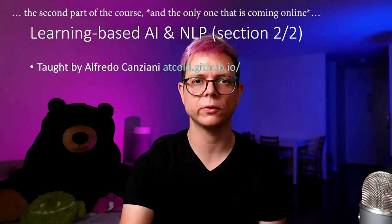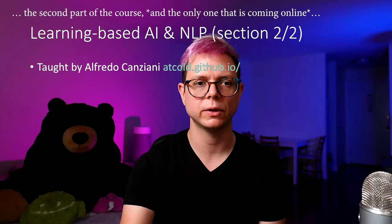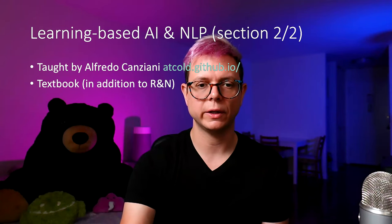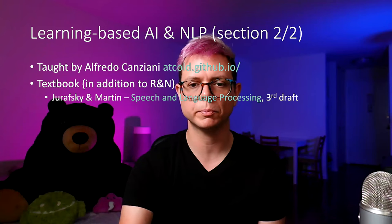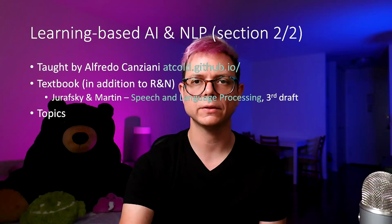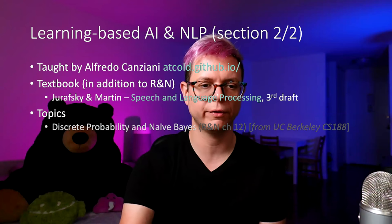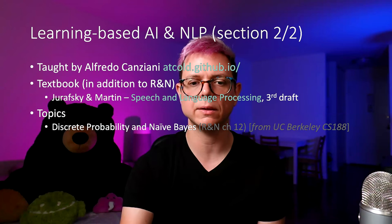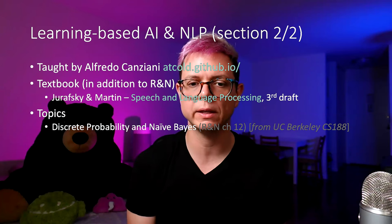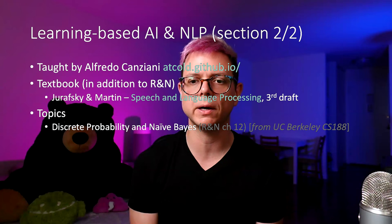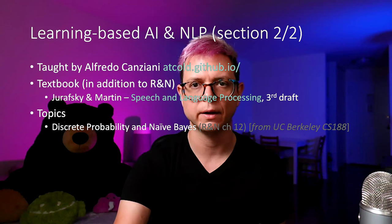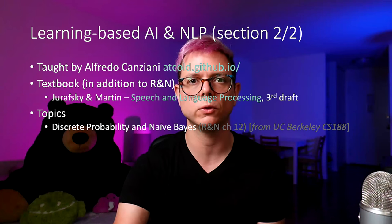I took care of the second part of the course, which is the only one coming online: Learning-Based AI and Natural Language Processing. The textbook I used in addition to Russell and Norvig was Jurafsky and Martin, Speech and Language Processing, 3rd draft. The topics of my part began with Discrete Probability and Naive Bayes. Discrete Probability was taken from Russell and Norvig chapter 12, whereas Naive Bayes comes from the UC Berkeley course CS188, thanks to Peter Abbeel who allowed me to use this content.